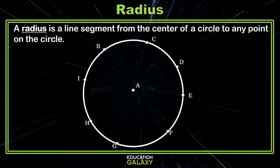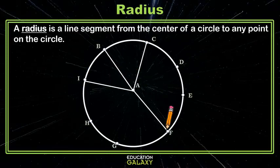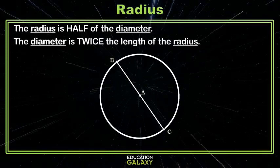A radius is a line segment from the center of the circle to any point on the circle. So if you take a pencil, start at A, and draw it to any point outside the circle, you have a radius. The radius and the diameter of the circle, they got a special connection. The radius is always half of the diameter. And that means the diameter is twice or double the length of the radius.